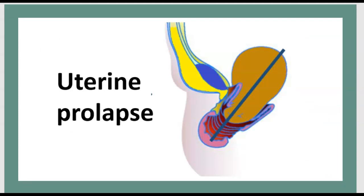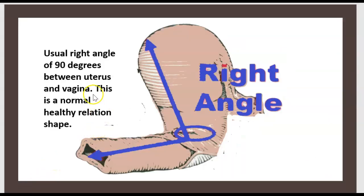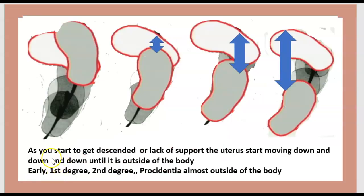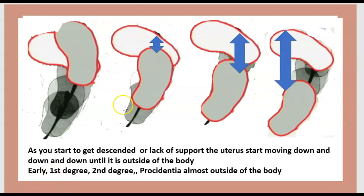Let's start with uterine prolapse. The usual right angle of 90 degrees between the uterus and vagina represents a normal, healthy relationship. As support decreases, the uterus starts moving down and down until it is outside of the body. The stages are: early first degree, second degree, and procedencia — almost outside of the body.